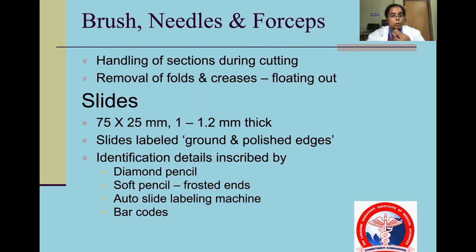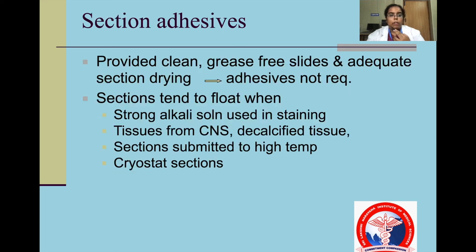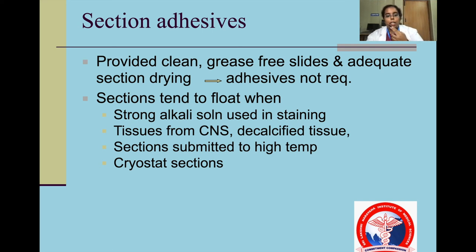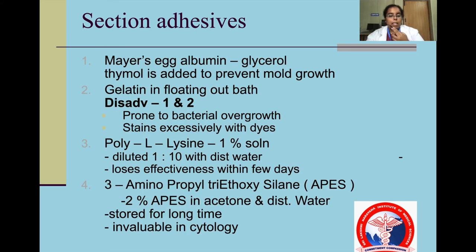Brush, needle and forceps are also important. Slides usually used are 75 x 25 mm, 1 to 1.2 mm thick, with ground and polished edges. They are inscribed by diamond pencil, soft pencil, automated labeling machines or barcodes. Section adhesives provide adequate adhesiveness of the tissue section to the slide. Sections tend to float when strong alkali solution is used in staining, with tissue from CNS or decalcified tissue, sections submitted to high temperature, and cryostat sections. Examples of adhesives are Mayer's egg albumin gelatin, poly-L-lysine, and 3-aminopropyl triethylsilane.